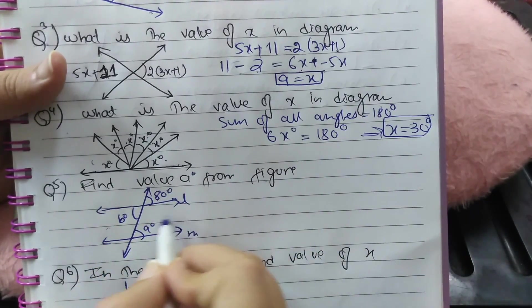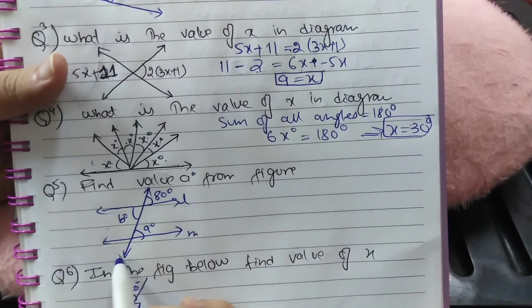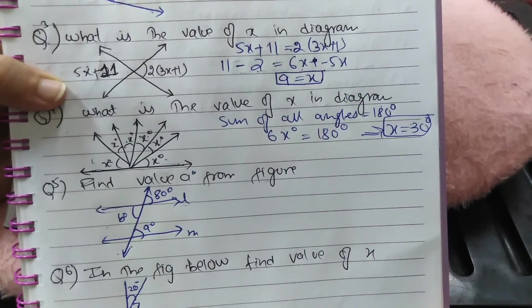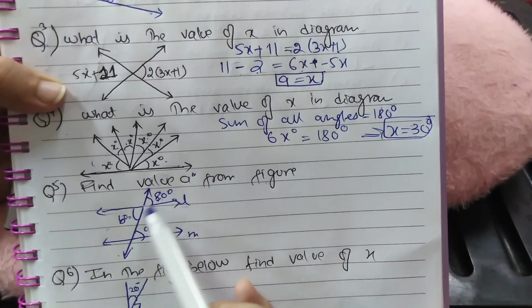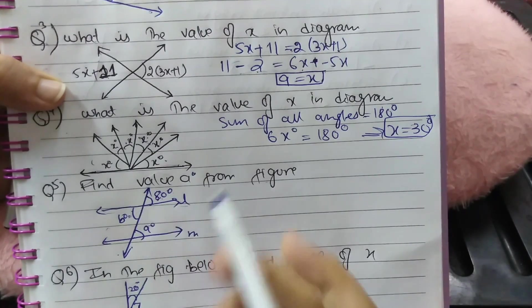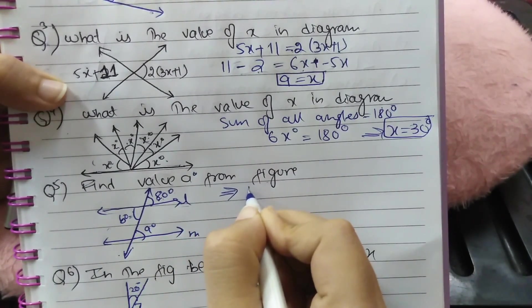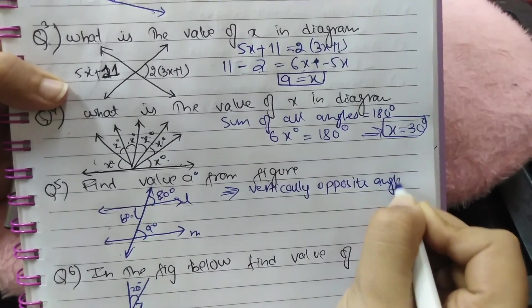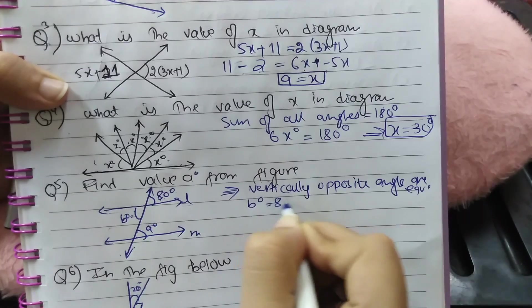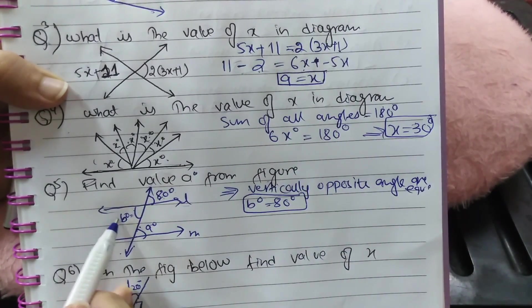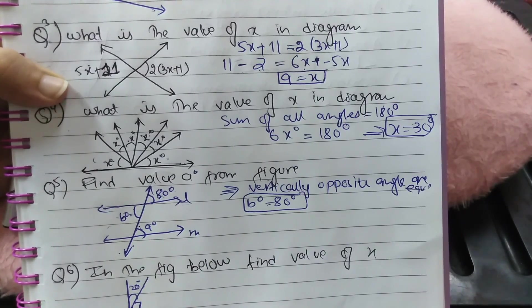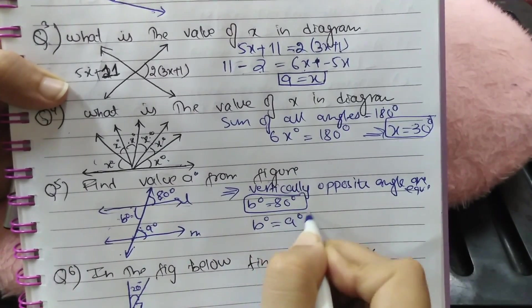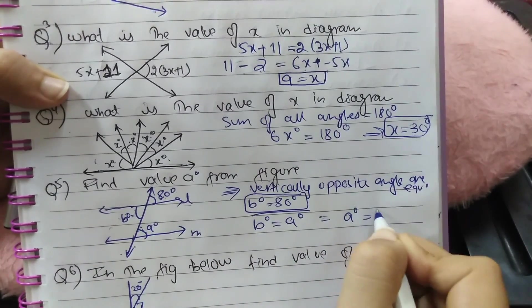Next question: find the value of A from the given diagram. Here there are 2 parallel lines and 1 transversal line, and we discussed different properties in part 1 of this lecture. Since these angles are vertically opposite angles, the property states that vertically opposite angles are equal, so B equals 80 degrees. Using the alternate interior angles property — alternate interior angles lie between the two lines and are equal — the value of A is 80 degrees.